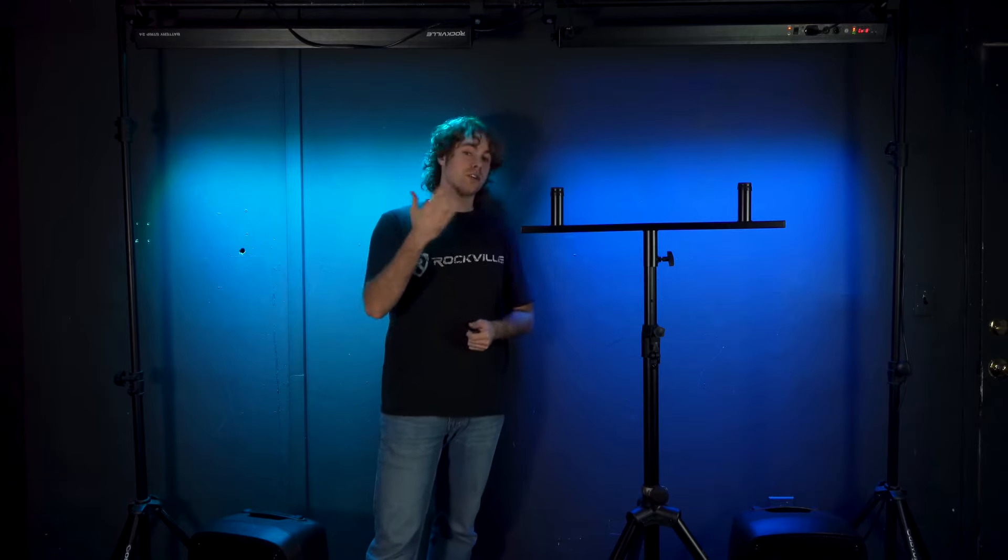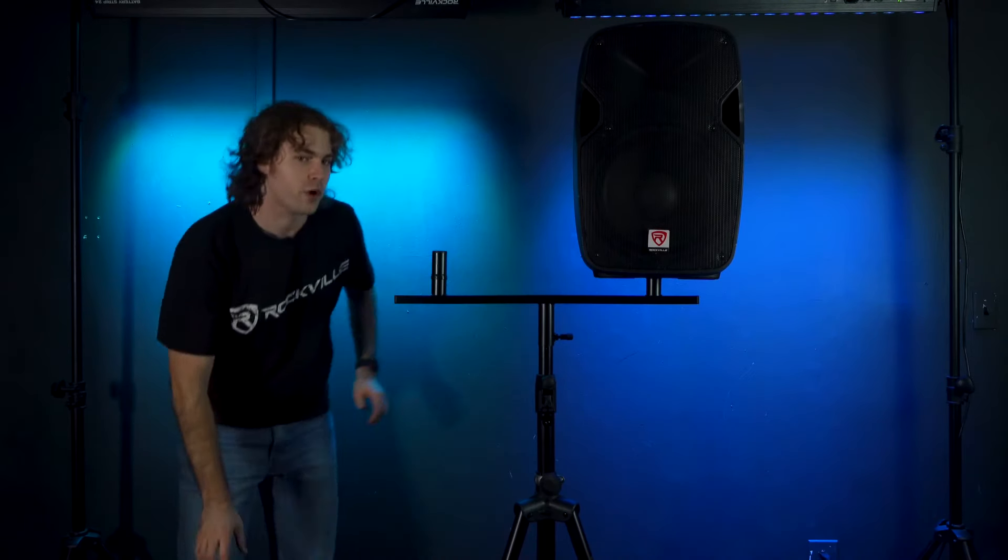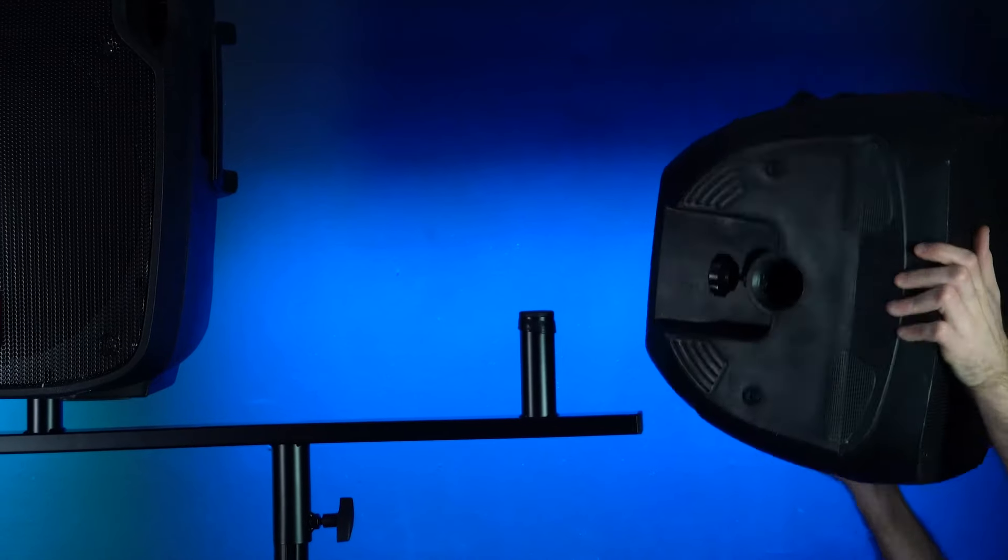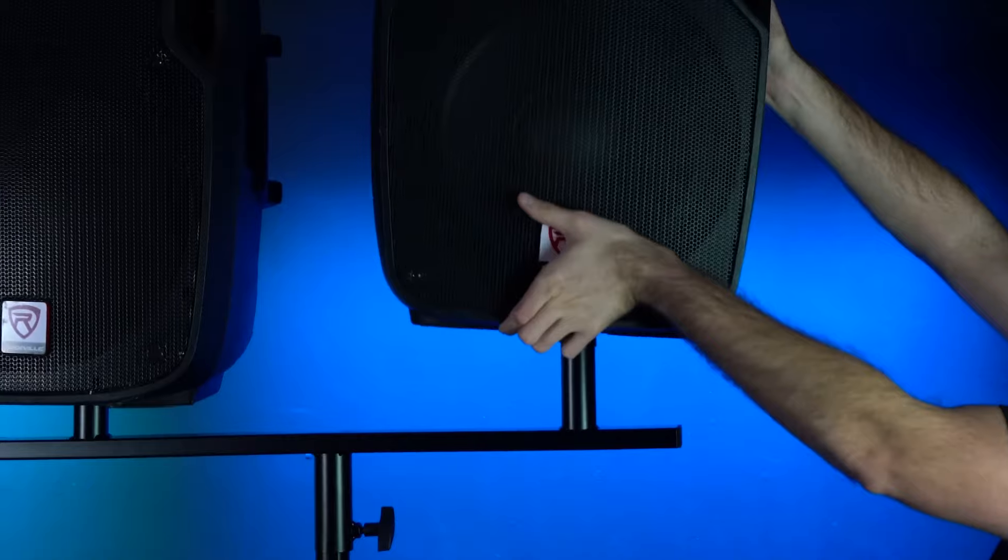Once the DP mount is set up on the stand, we can mount our speakers. Take two speakers and line up the pole socket on the bottom to the pole mounts on the top.